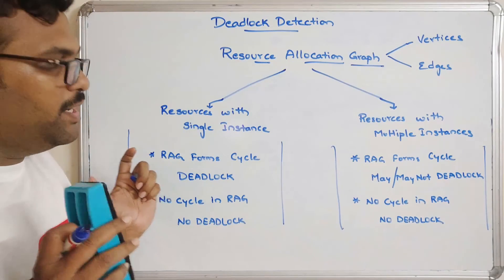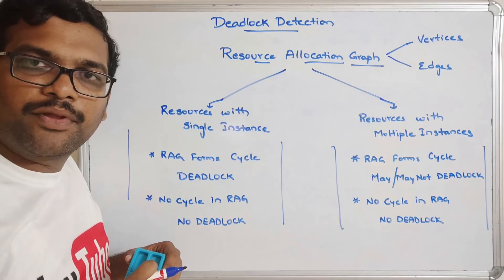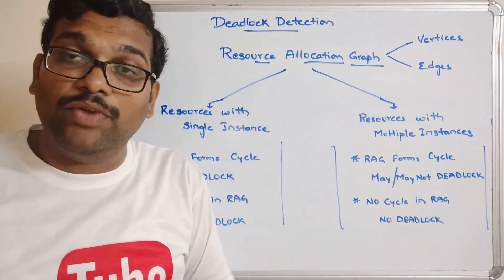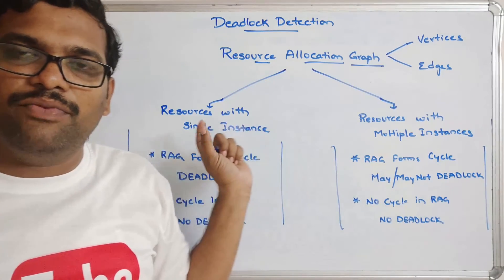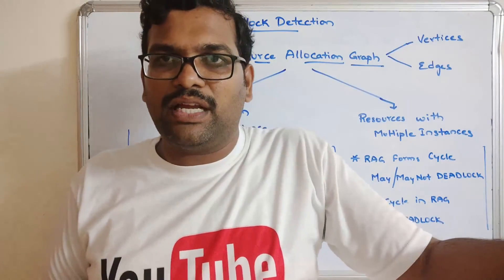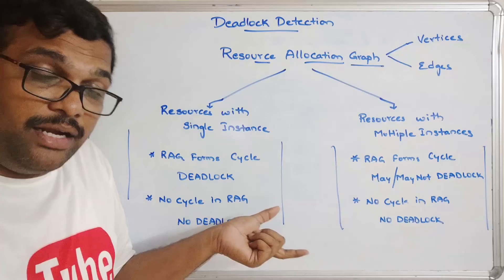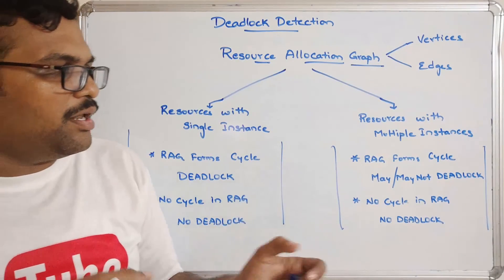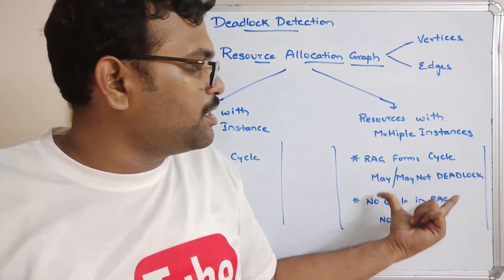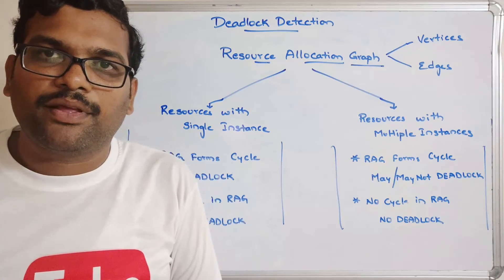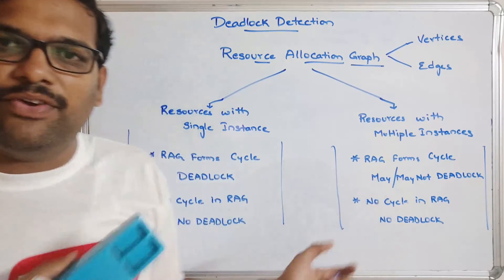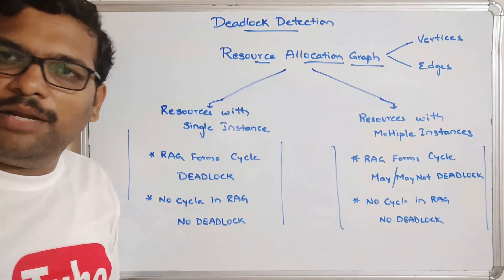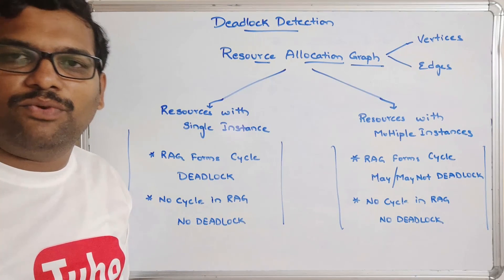Hope you understood this one. All your queries have been covered. How to detect the deadlock situation if the resources have multiple instances — that approach has been discussed. Hope you understood. If you have any doubts regarding this, feel free to post in the comment section. I will try to clarify all your doubts. If you really enjoyed my session, like and share it with your friends, and don't forget to subscribe to our channel. Thanks for watching. Thank you very much.